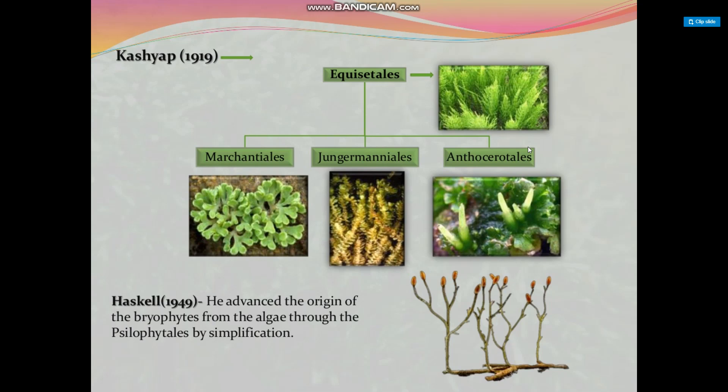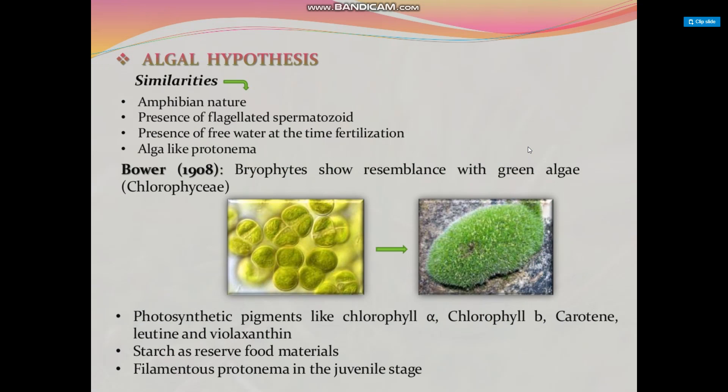The algal hypothesis is based on the following similarities: first, the amphibian nature of bryophytes; second, the presence of flagellated spermatozoids; third, the presence of free water at the time of fertilization; and fourth, algae-like protonema. Bryophytes resemble green algae (Chlorophyceae) in photosynthetic pigments such as chlorophyll a, chlorophyll b, carotene, lutein, and violaxanthin, with starch as reserve food material, and filamentous protonema in juvenile stages.